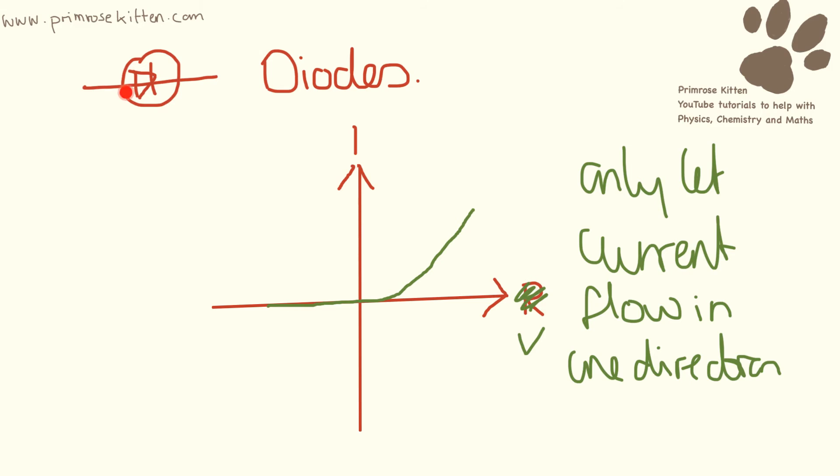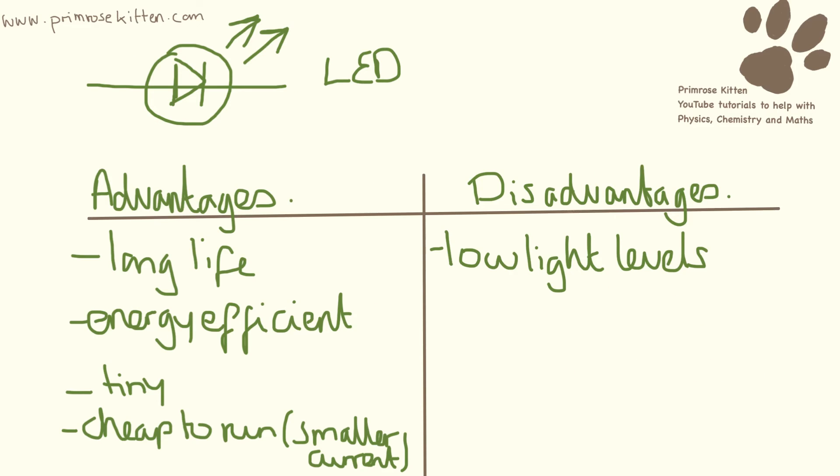We can see this from the symbol, which has an arrow in it. So the current is only going to be allowed through in this direction here. LEDs are awesome little things, and this is the symbol for them. They are light emitting diodes, so current is only going to go through in one direction and they're going to have light emitted.